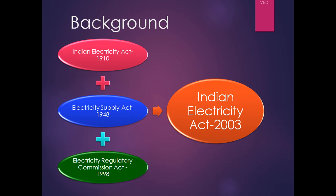The background for this regulation is the Indian Electricity Act 2003. Earlier there were three acts: the Indian Electricity Act 1910, the Electricity Supply Act 1948, and the Electricity Regulatory Commission Act 1998. These three acts were combined to form the Indian Electricity Act 2003, after which the previous three acts were abolished. Now we follow the Indian Electricity Act 2003.